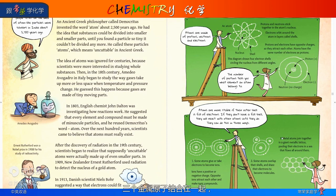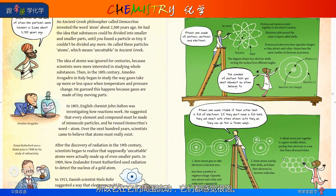And three: metal atoms join together in a giant metallic lattice, which is just pooling their electrons in a sea so it flows all around them, and they all feel full.